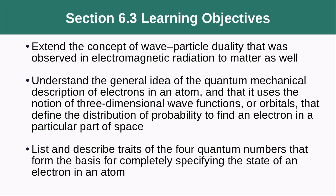In section 6.3, we're going to extend the concept of wave-particle duality observed for electromagnetic radiation. We'll understand quantum mechanical descriptions of electrons in atoms using three-dimensional wave functions or orbitals that define the probability distribution of finding an electron in a particular part of space, and list the traits of four quantum numbers that specify the state of an electron in an atom.